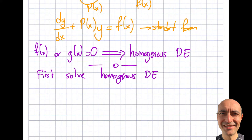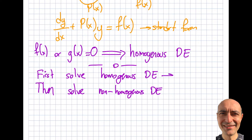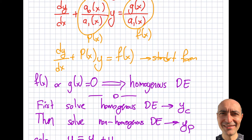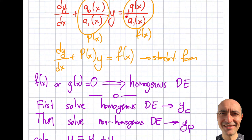The approach I take when solving a linear differential equation is: first, solve the homogeneous differential equation to get the complementary solution Yc. Then solve the non-homogeneous equation to get Yp, the particular solution. The final solution is Y equals Yc plus Yp. Let's look at them one by one, starting with the homogeneous version where the right-hand side is zero.